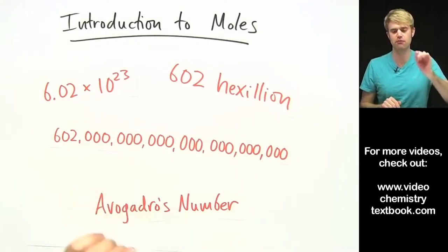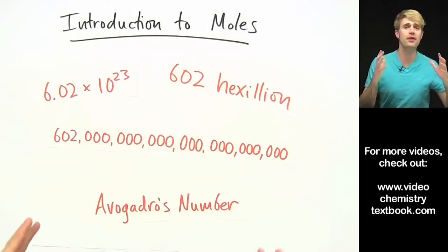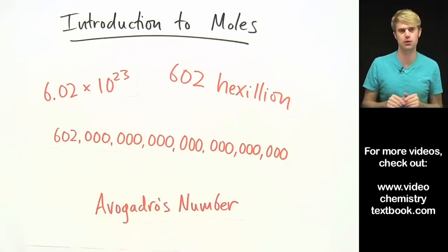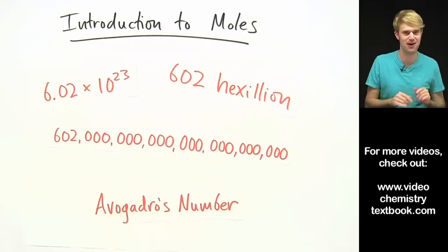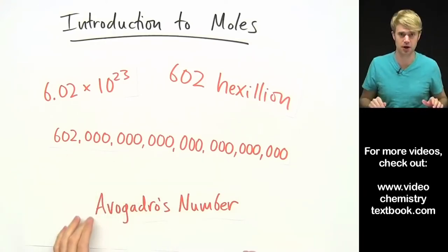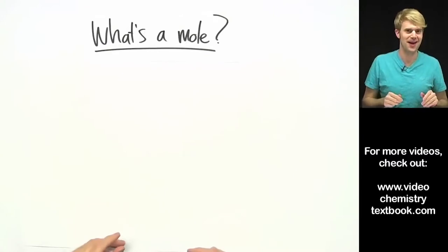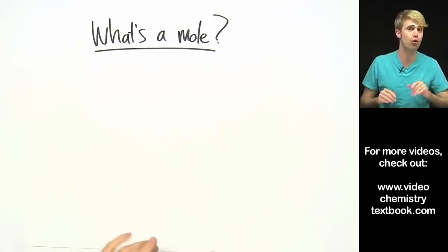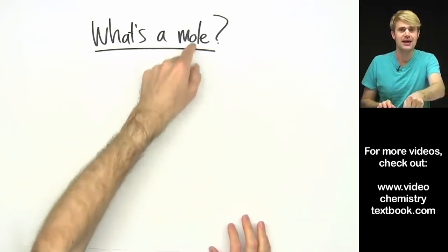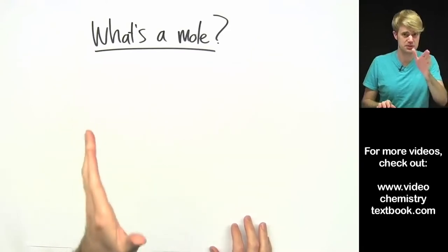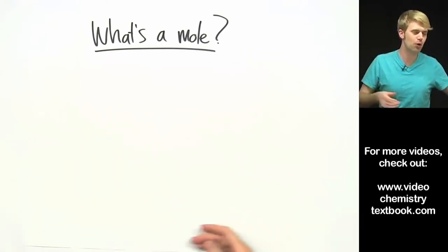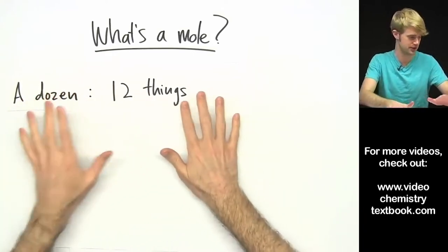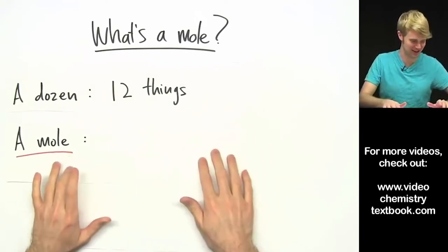In this video we're going to talk about the basics of moles — what they are and some important numbers and terms. We're going to start from the very beginning, so no matter how much you know or don't know about moles, this video will be a great place to start. So what's a mole? A mole is a name for a specific number of things. A mole is kind of like a dozen — a dozen is the name for twelve things.